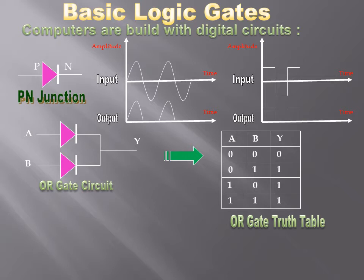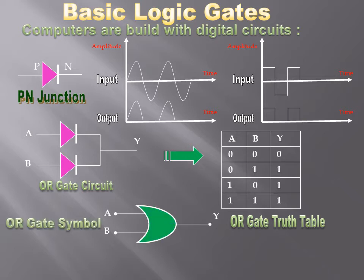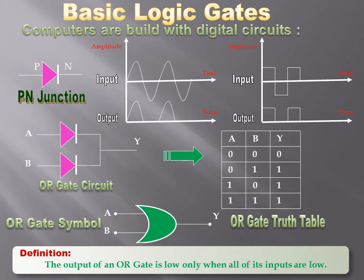Inputs are not limited to only two — there can be more PN junctions connected in the same way, giving many OR inputs. Unless at least one of the PN junctions has positive voltage, the output will not be high (1). This circuit has a symbol as shown. The gate is defined by a unique condition: when all inputs are 0, the output is 0. For all other conditions the output will be high. So we define the OR gate as: the output of an OR gate is low only when all of its inputs are low.